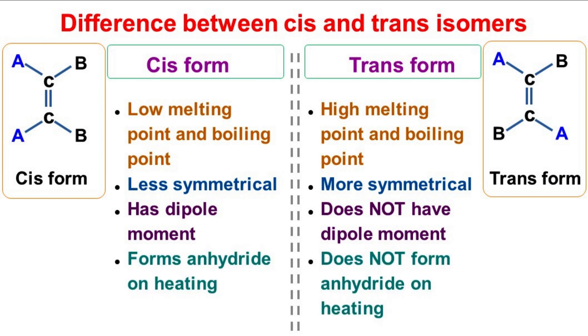The cis isomer forms an anhydride on heating, whereas the trans isomer does not form an anhydride on heating.